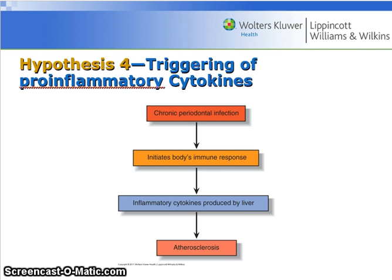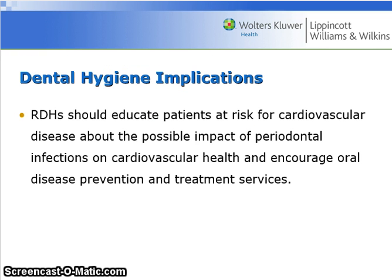Hypothesis 4 is that the chronic periodontal infection initiates the body's immune response, thereby triggering inflammatory cytokines to be produced by the liver, which then leads to atherosclerosis. Dental hygienists should educate patients who are at risk for cardiovascular disease about the possible impact of periodontal infections on cardiovascular health and encourage oral disease prevention and treatment services.